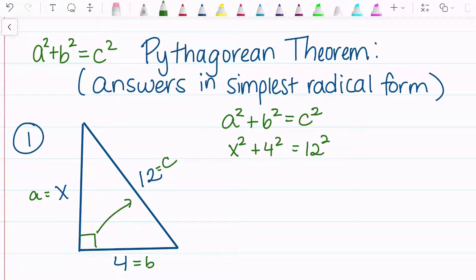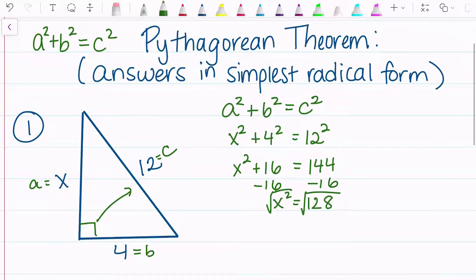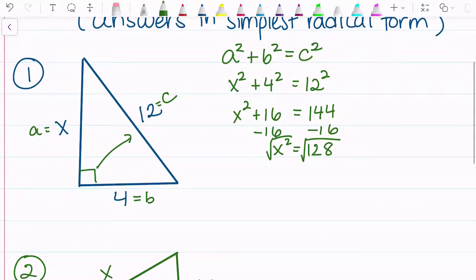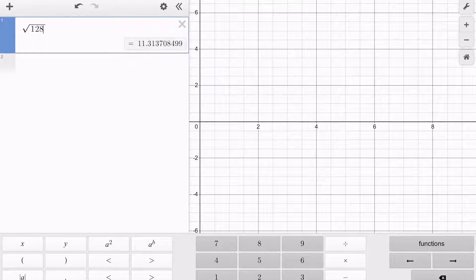Now I'm going to simplify. 4 squared is 16, and 12 squared is 144. I'm going to take away 16 from both sides, and I'm left with 128. Now to get x alone, since it's being squared, we're going to square root both sides. We could type this into the calculator and get a decimal — it gives me 11.3.